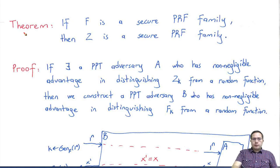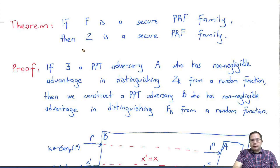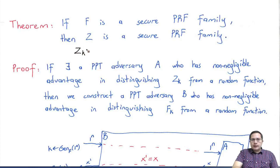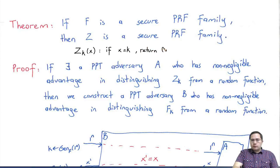Let's go over one of the proofs in the sample exam. In this proof we had a pseudo-random function family f, and using that we constructed a pseudo-random function family Z. Z_k(x) was computed as follows: if x is equal to the key k, then it returned zero; otherwise it returned f_k of x.